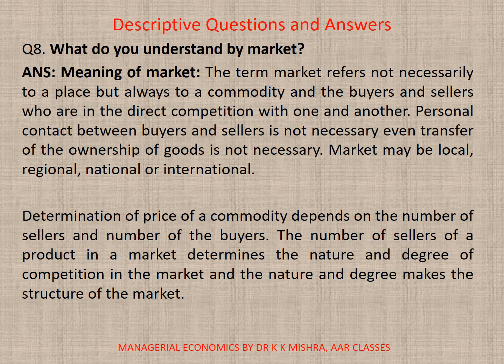Question number eight: what do you understand by market? The term market actually refers not necessarily to a particular place, but always to a commodity and the buyers and sellers who are in direct competition with one another. Personal contact between buyers and sellers is not necessary, and even transfer of ownership of goods is not necessary. Market may be local, regional, national, or international. The number of sellers of a product determines the nature and degree of competition, which makes the structure of the market.